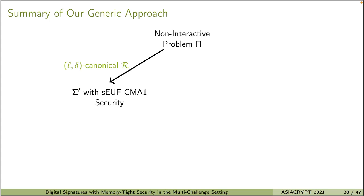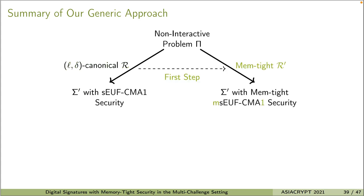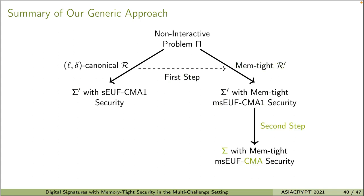Let me summarize our approach. We first assume that for signature scheme sigma prime, there is an L-delta canonical reduction R which proves that sigma prime is SUF-CMA1 secure when the non-interactive problem pi is hard. In the first step, we construct a memory-tight reduction R' using R, and R' proves that sigma prime has memory-tight MSUF-CMA1 security under the same assumption — successfully going from the single-challenge setting to the multi-challenge setting. Then in the second step, we apply our transformation to convert sigma prime to sigma with the help of nonces, and sigma has memory-tight MSUF-CMA security. Furthermore, if L is a constant and delta is small and independent of the adversary, then sigma is a fully tight signature scheme in all three dimensions.